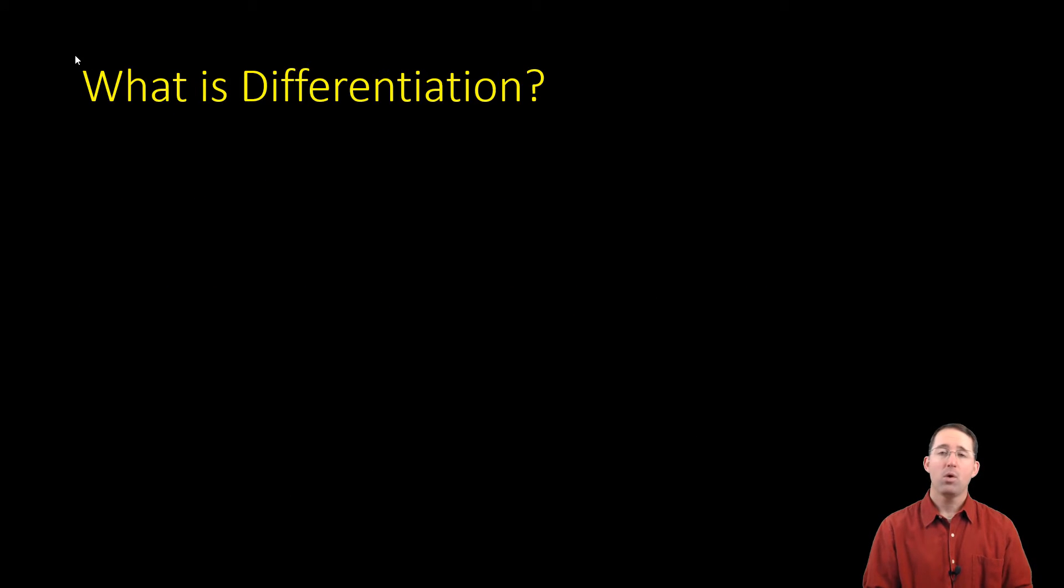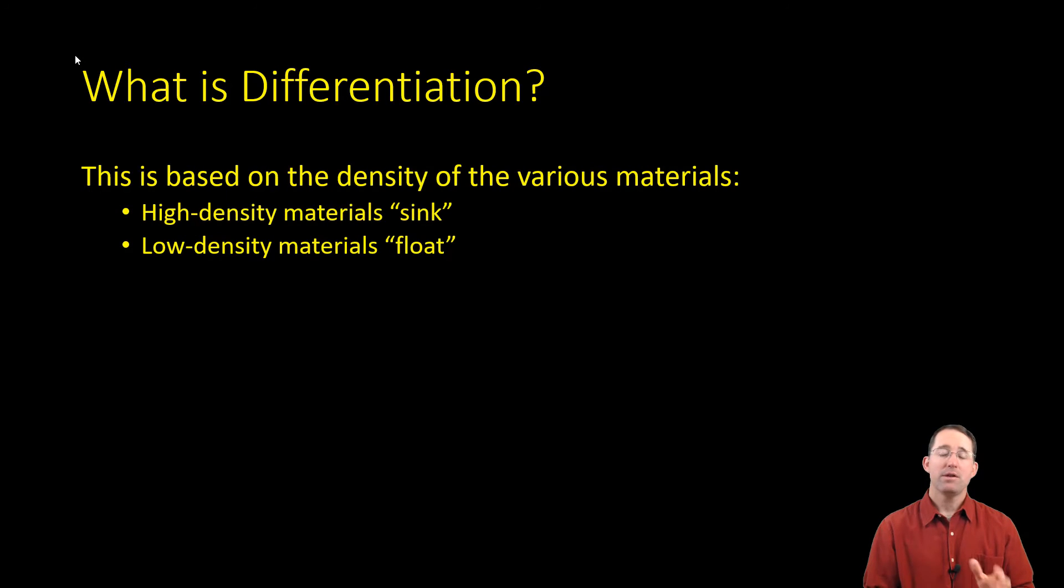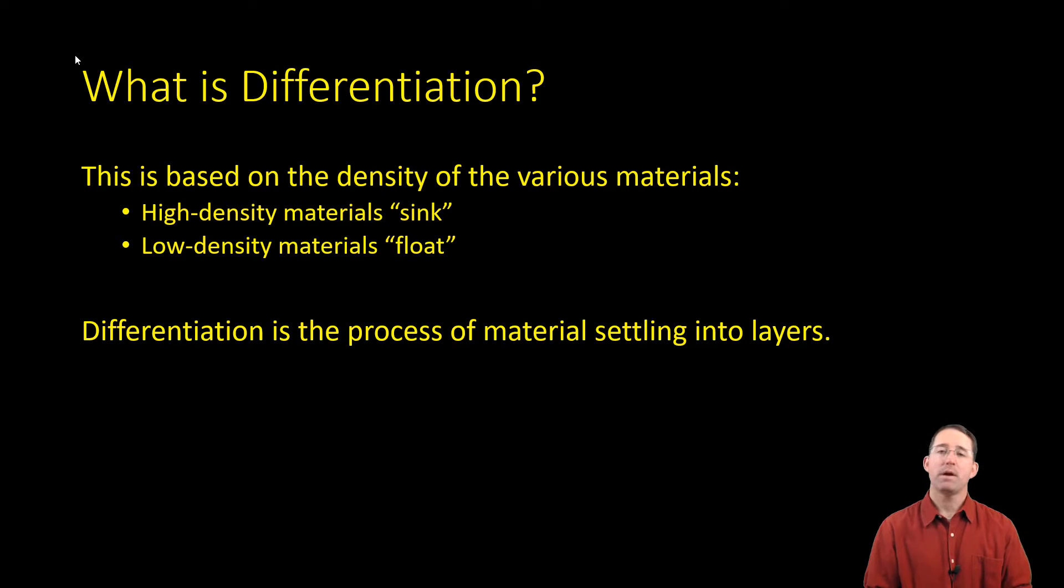Of course, this brings up the question of, where do layers come from? Which means, what exactly is differentiation? Differentiation is the process of making layers. And it is based on the density of the various materials in the planet. Remember that higher density materials will sink towards the bottom or interior of a planet. And low density materials will float up towards the top. Best example of this is oil and water. If you mix these two and you shake them up really well, they will not remain together for very long. Because they have very different densities, among other properties, they will eventually separate into two distinct layers. The same exact thing happens in planetary interiors.